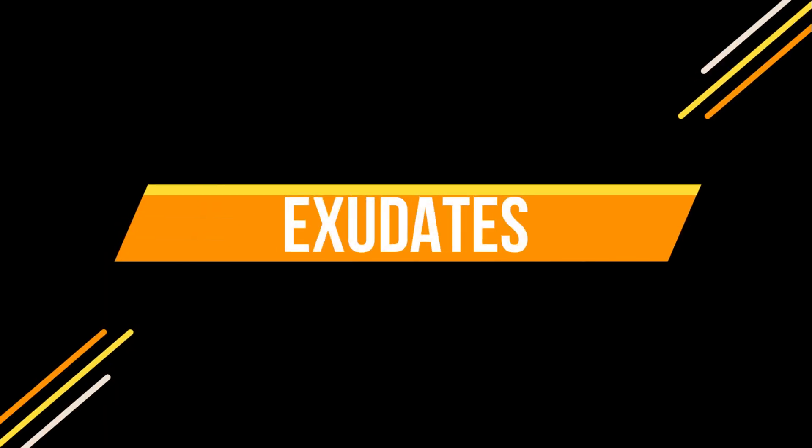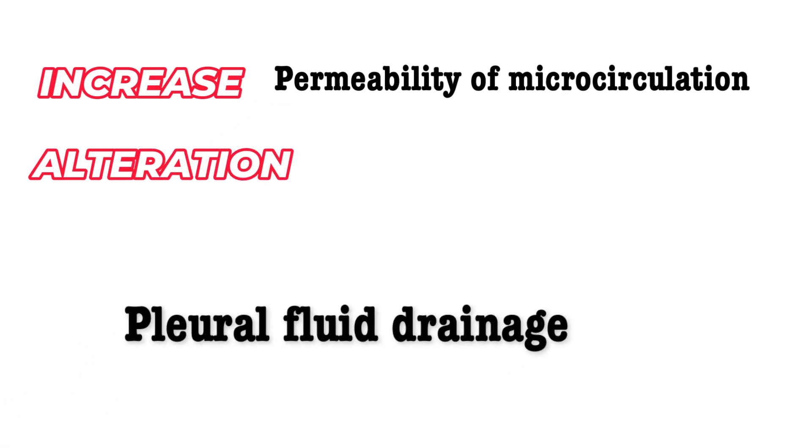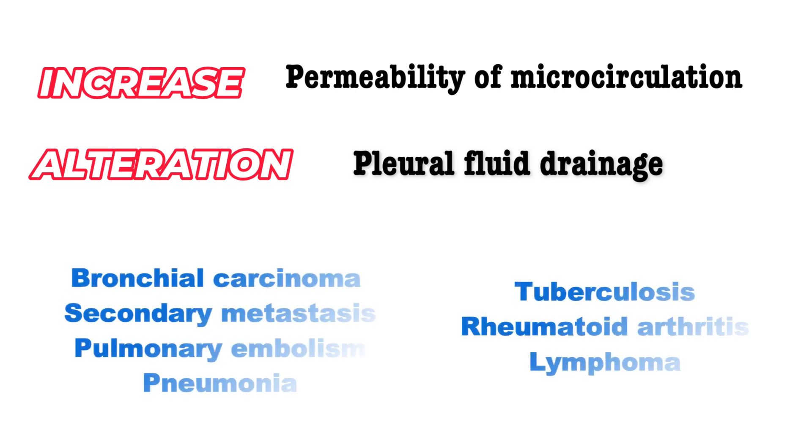Exudates occur due to an increase in permeability of the microcirculation or due to an alteration in the pleural fluid drainage to the lymph nodes. Examples include bronchial carcinoma, secondary metastatic malignancy, pulmonary embolism, pneumonia, tuberculosis, rheumatoid arthritis, and lymphoma.